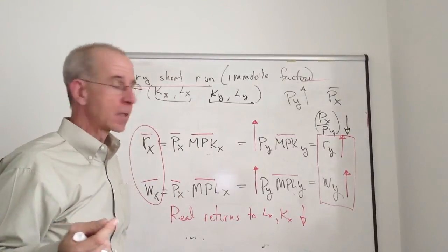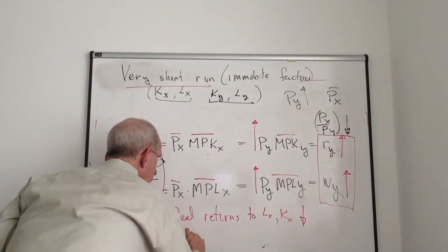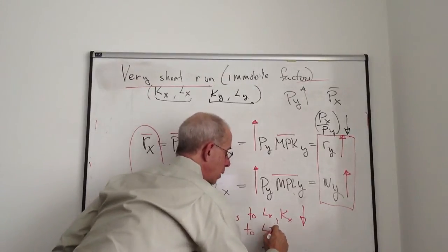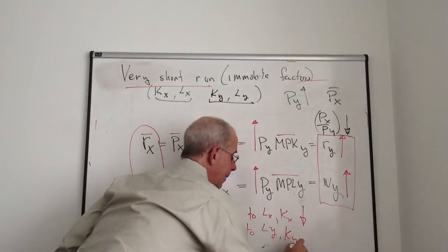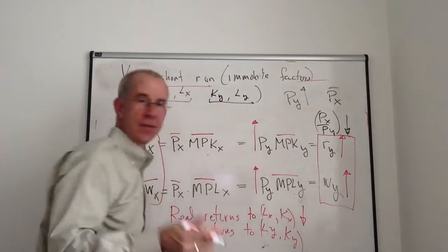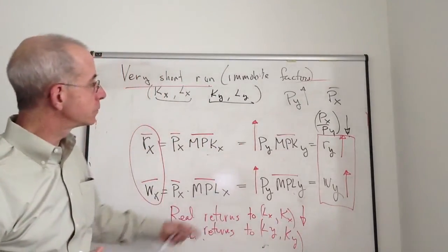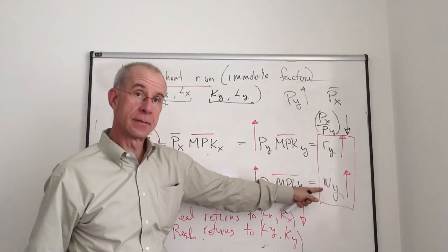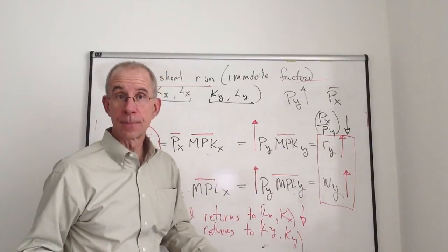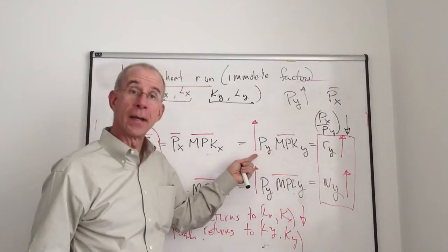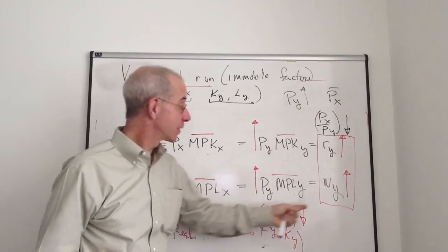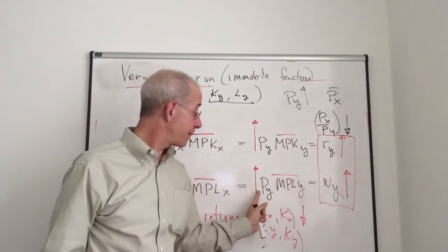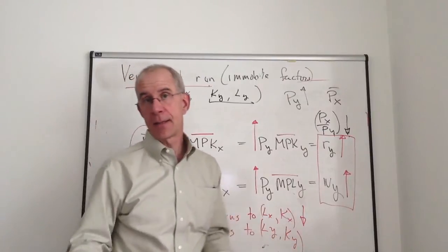The real returns to capital and labor in Y have exactly the opposite effects. They've seen a raise - capital owners and workers in sector Y. So they're getting paid more money. They can buy the same amount of Y, right? Because the payment to labor went up because the price of Y went up. So if this goes up by 10%, the wage goes up by 10%. They can buy the same amount of Y.